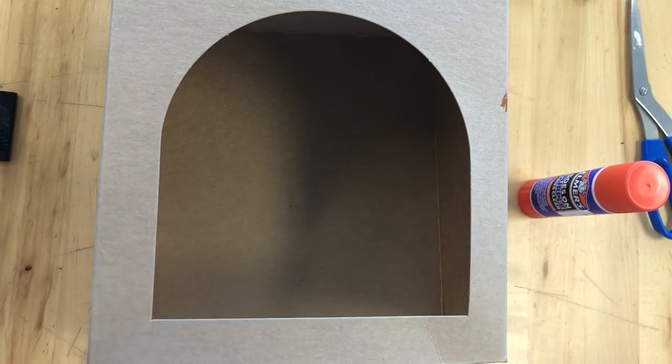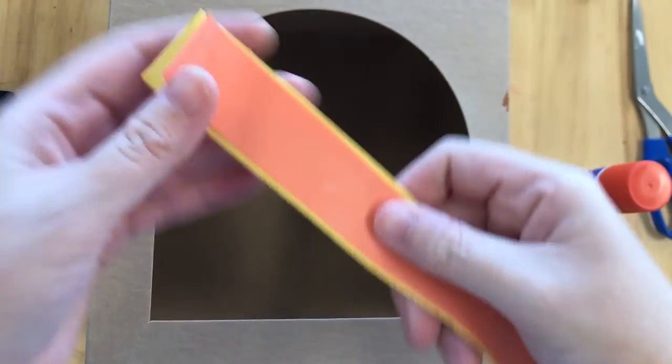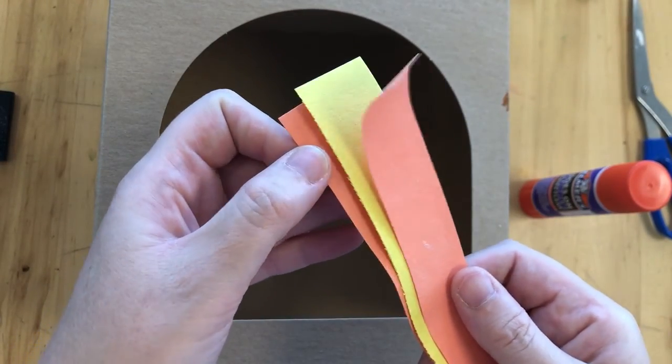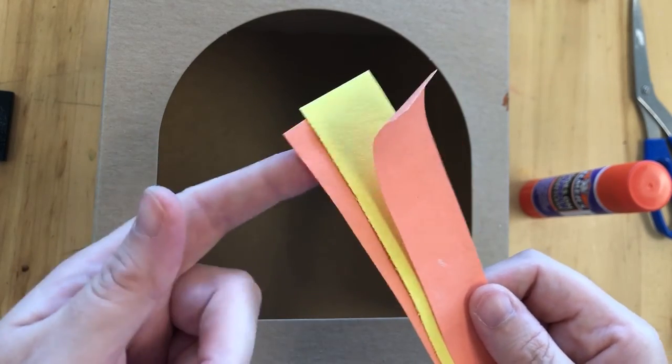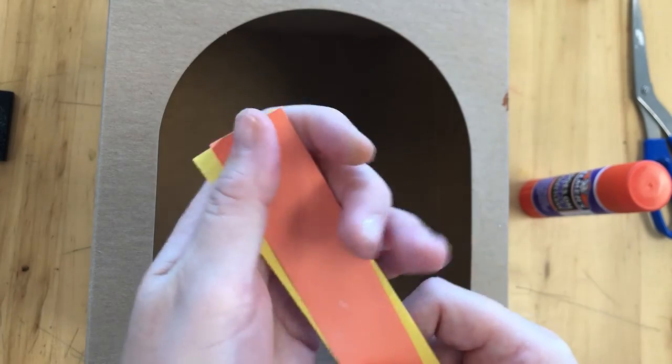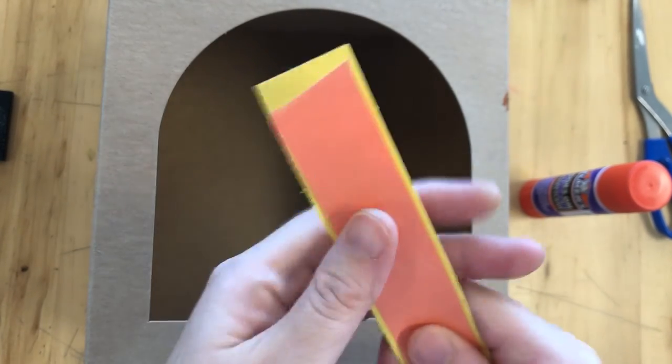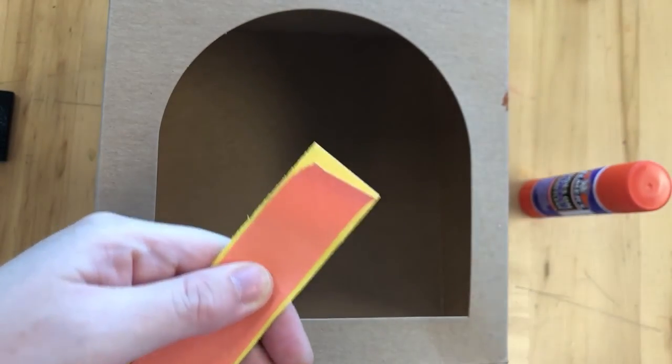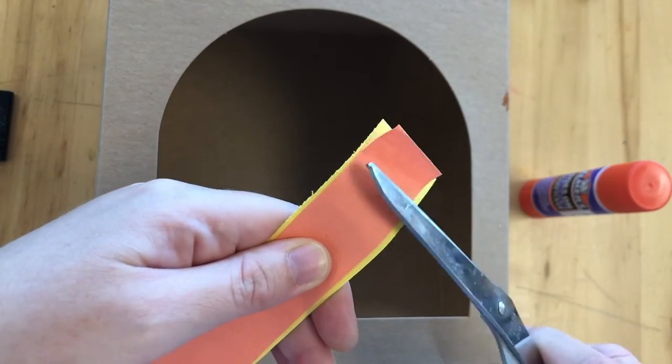The next thing I'm going to do is make something that looks a bit like the brickwork. So all I've got here is some strips of colored paper. Now you might get orange or yellow bricks but you don't have to stick with regular brick colors. Brick can be painted any color at all so you can use any colors you like.